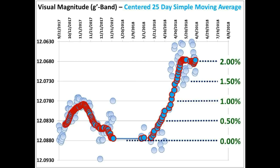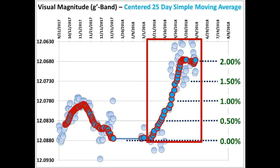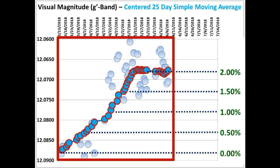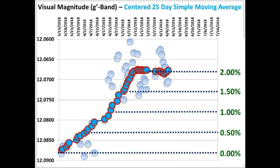So let's zoom in on that portion of the light curve that is highlighted by the red box, and we will then move forward in time from June 7th.